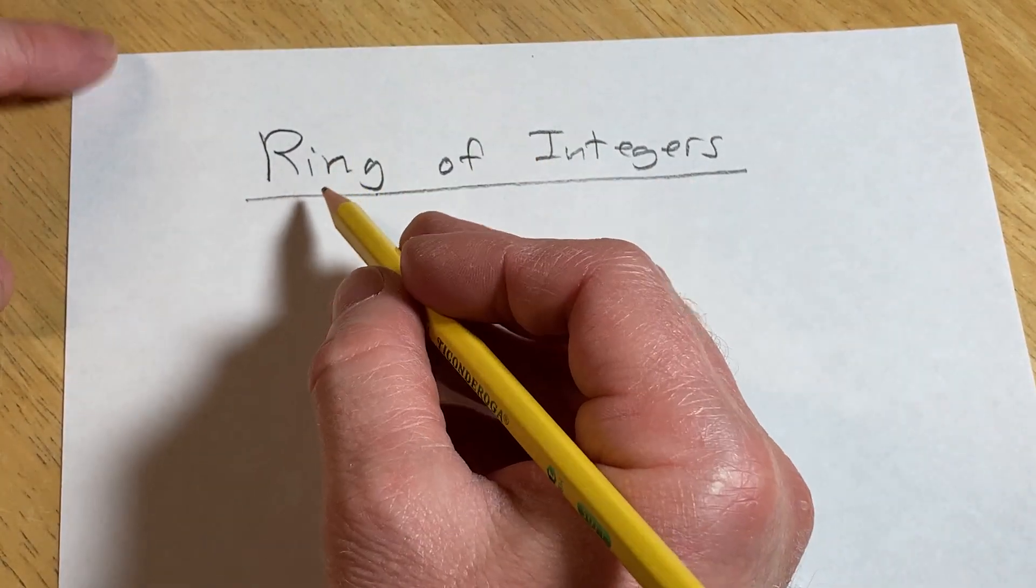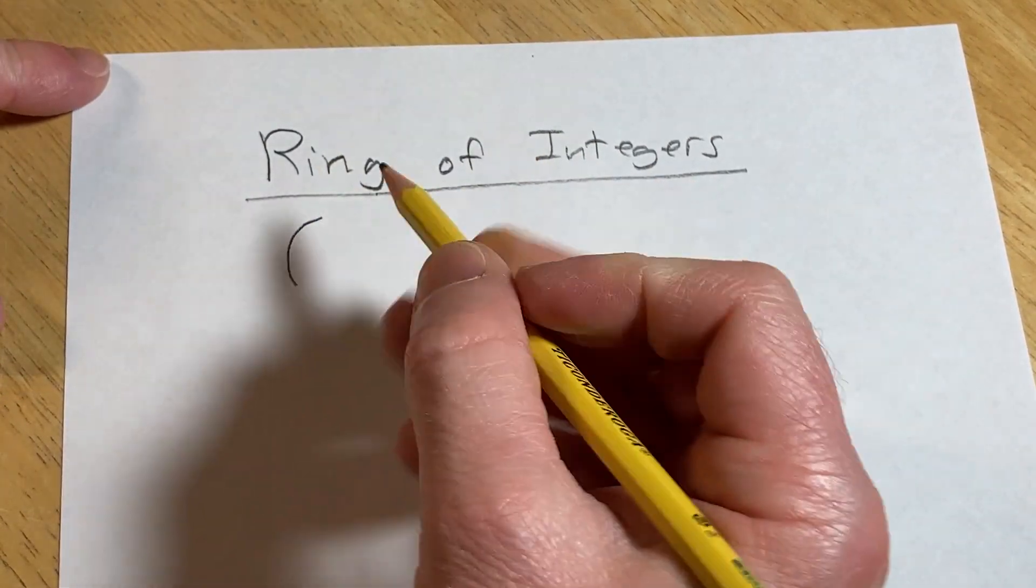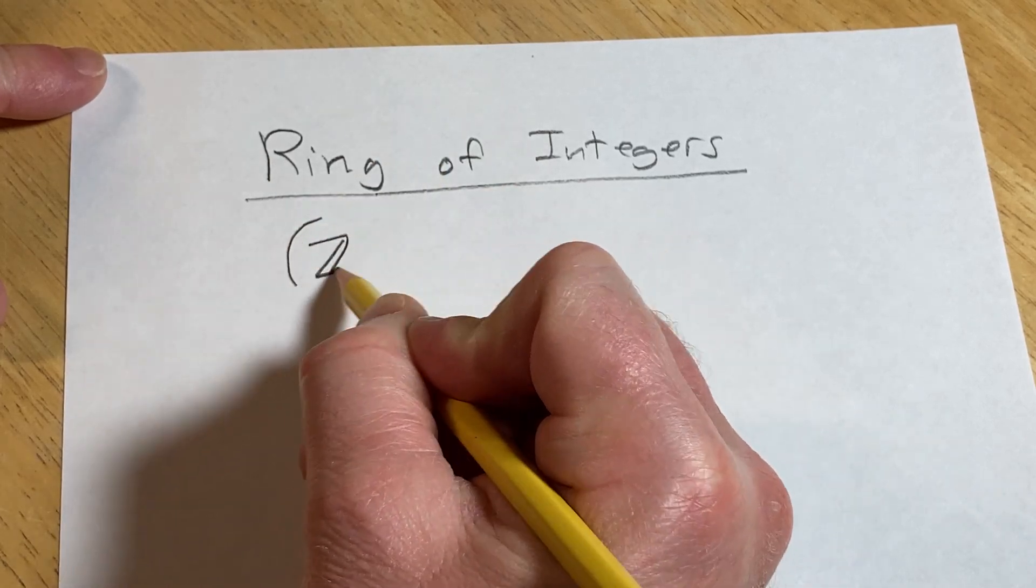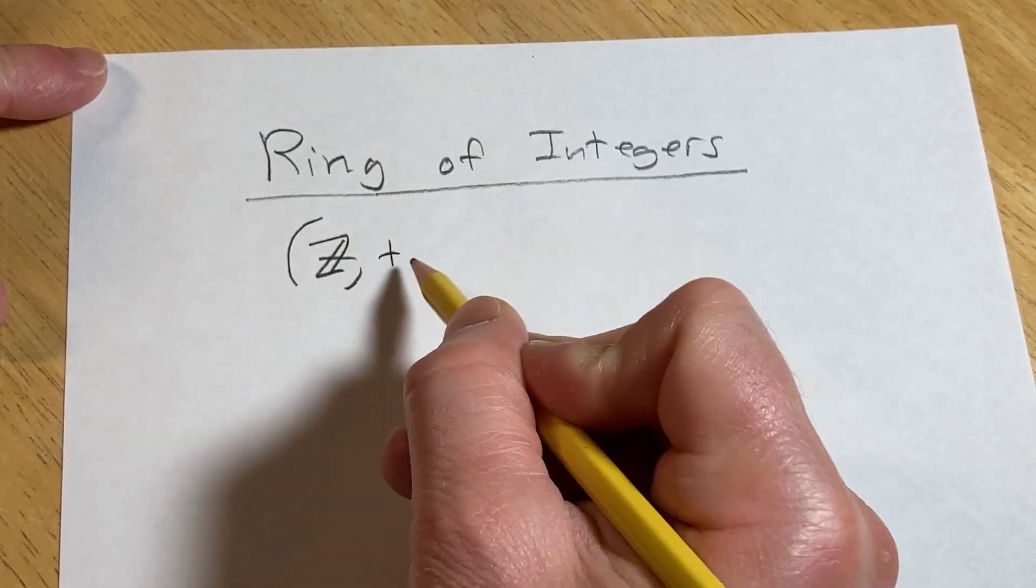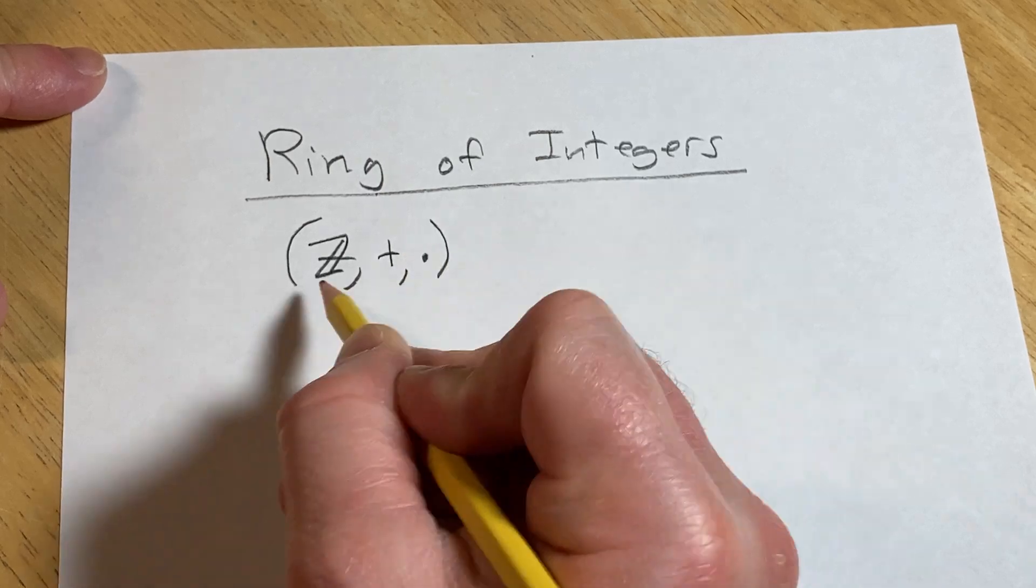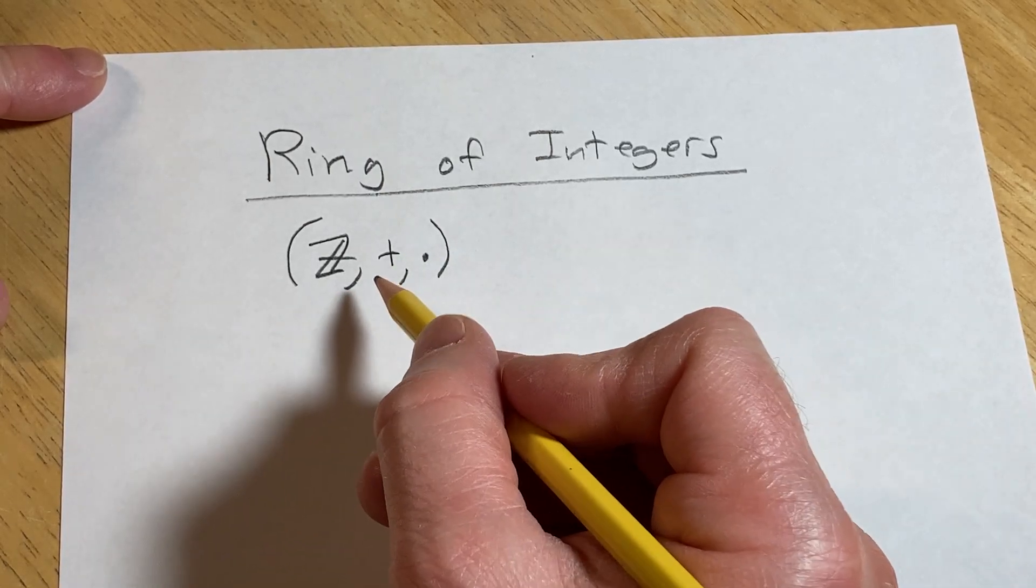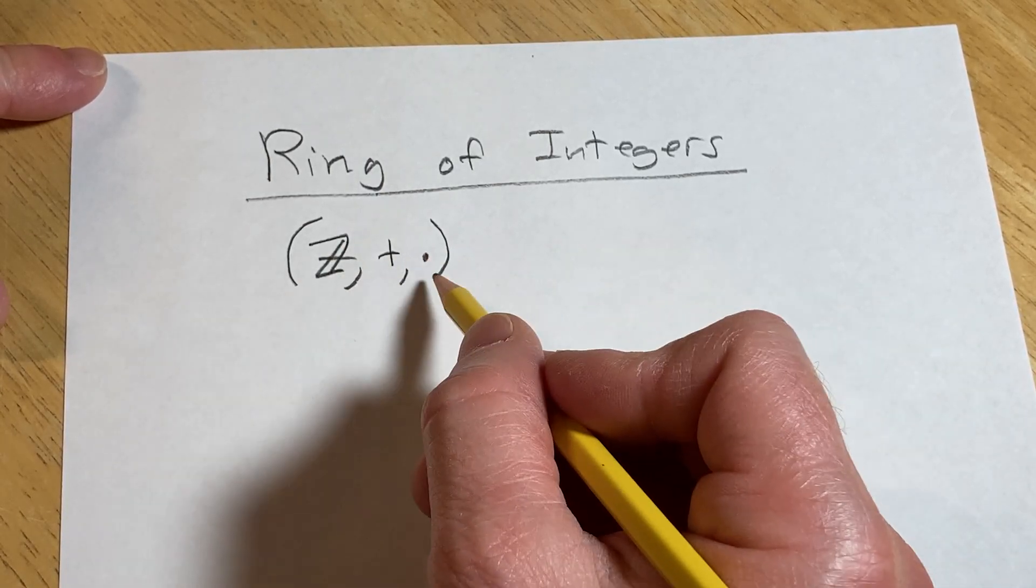So, the integers form a ring. We can denote this ring by the following triple: the set of integers, the operation of addition, and the operation of multiplication. A ring is a set with two operations.